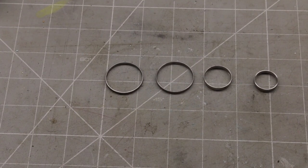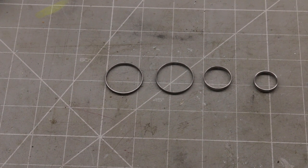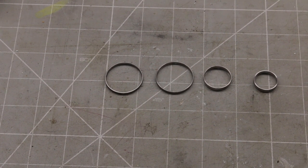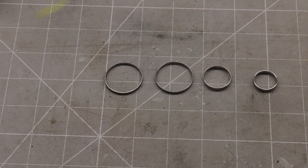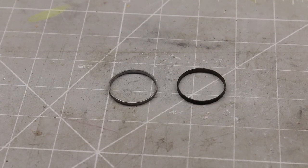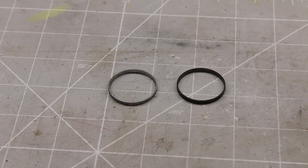Before I could make the hub or nave I had to make the bands that hold it together. I turned these out of mild steel bar. Before fitting these would be cold blued as you can see on the right.